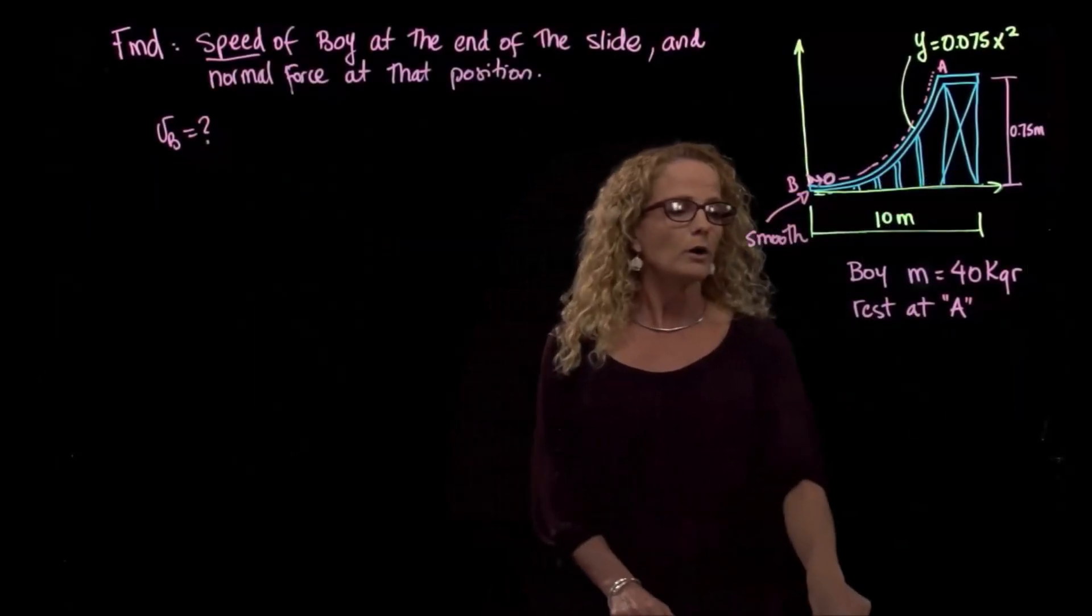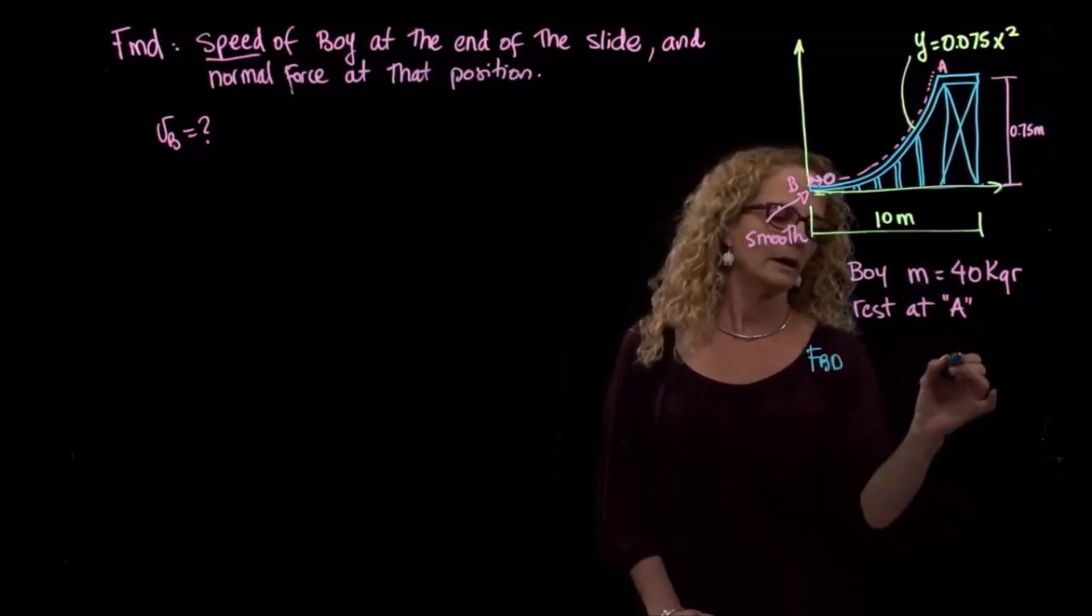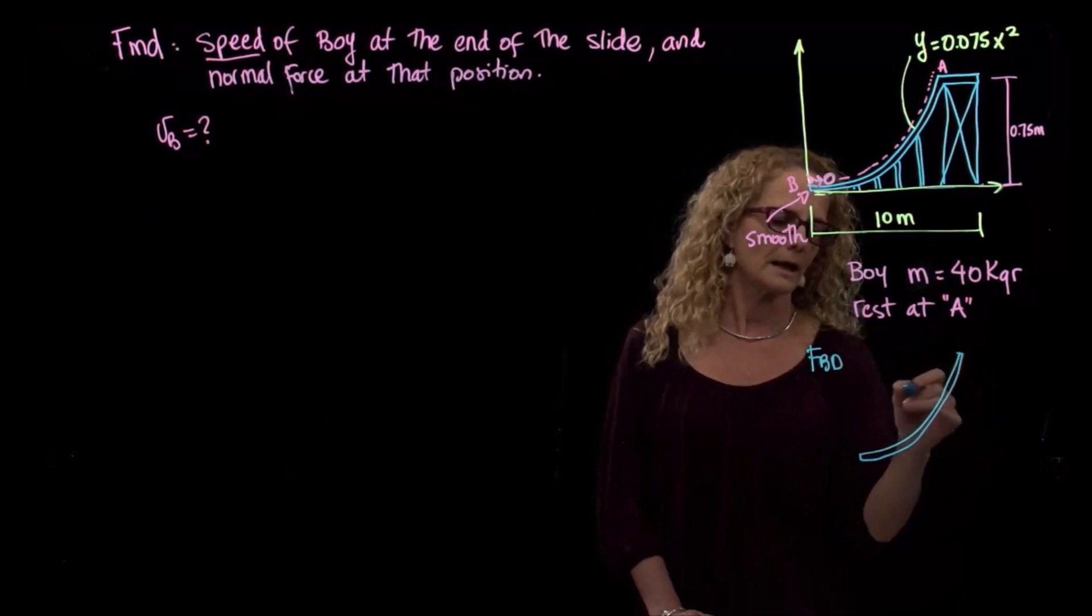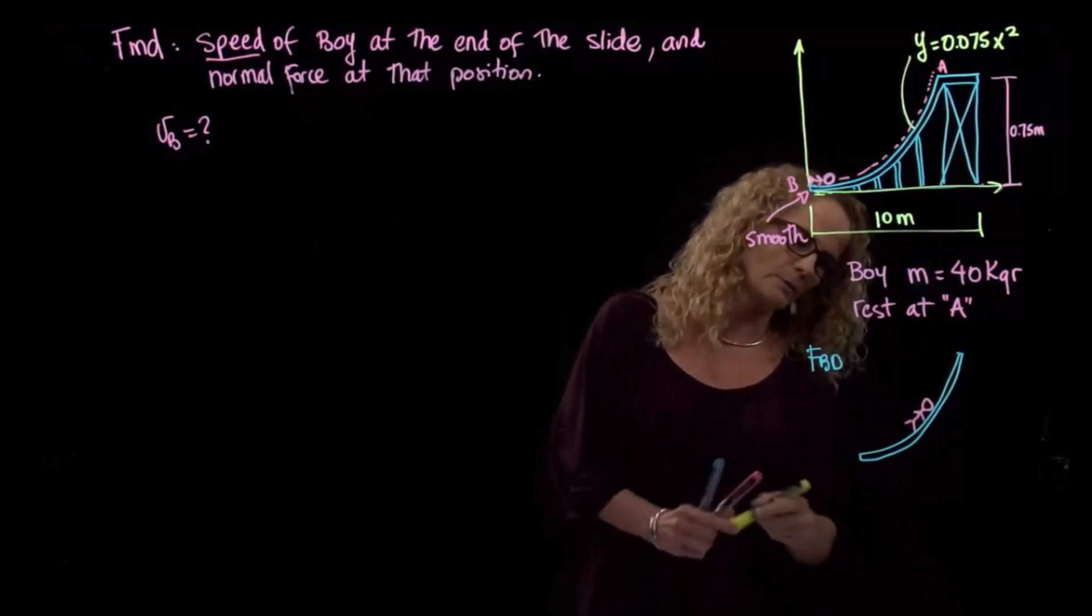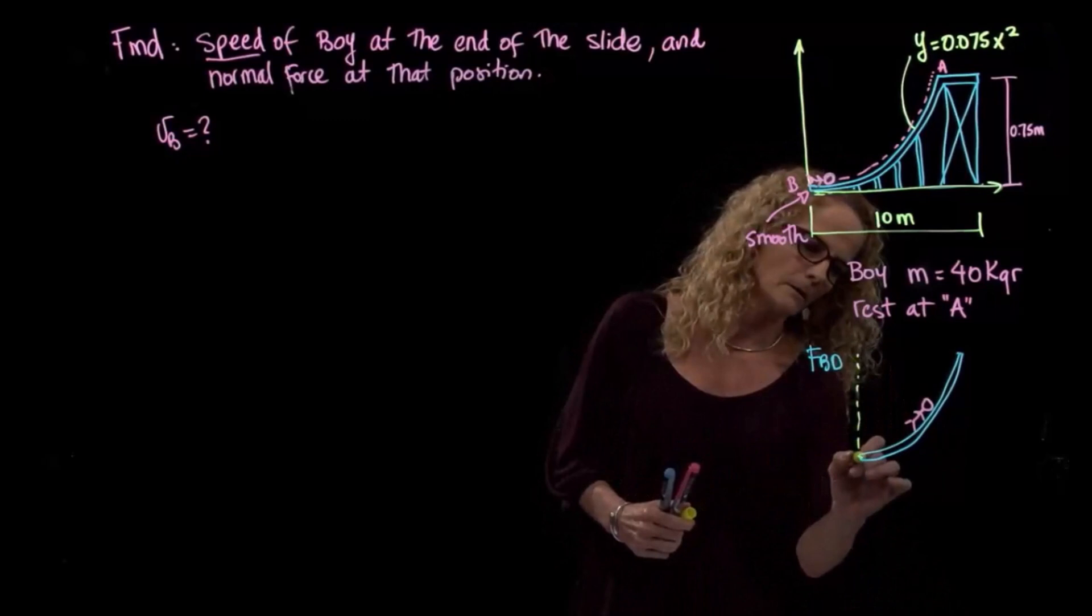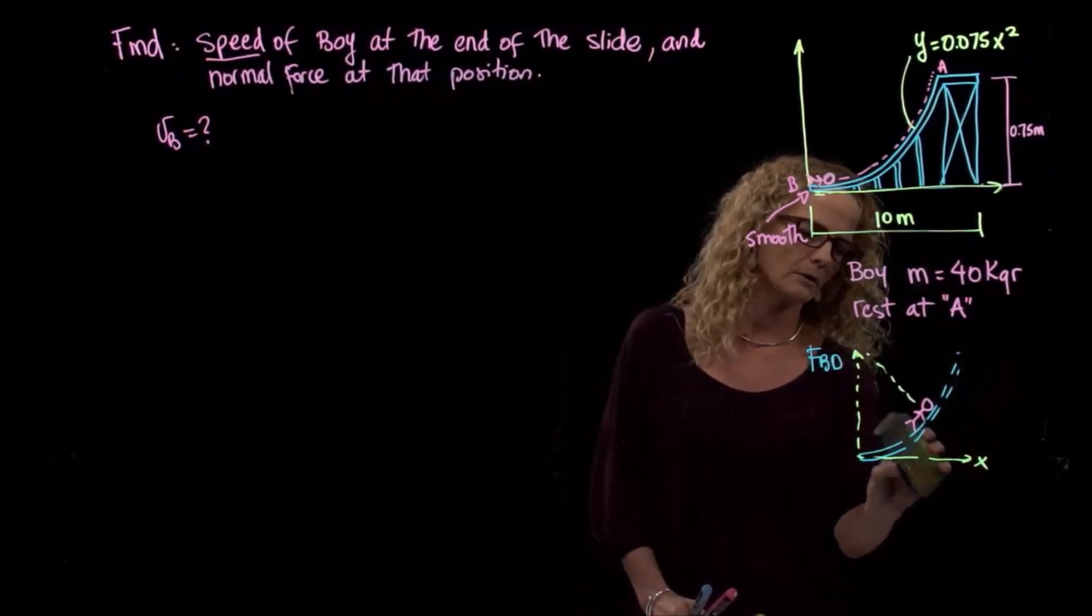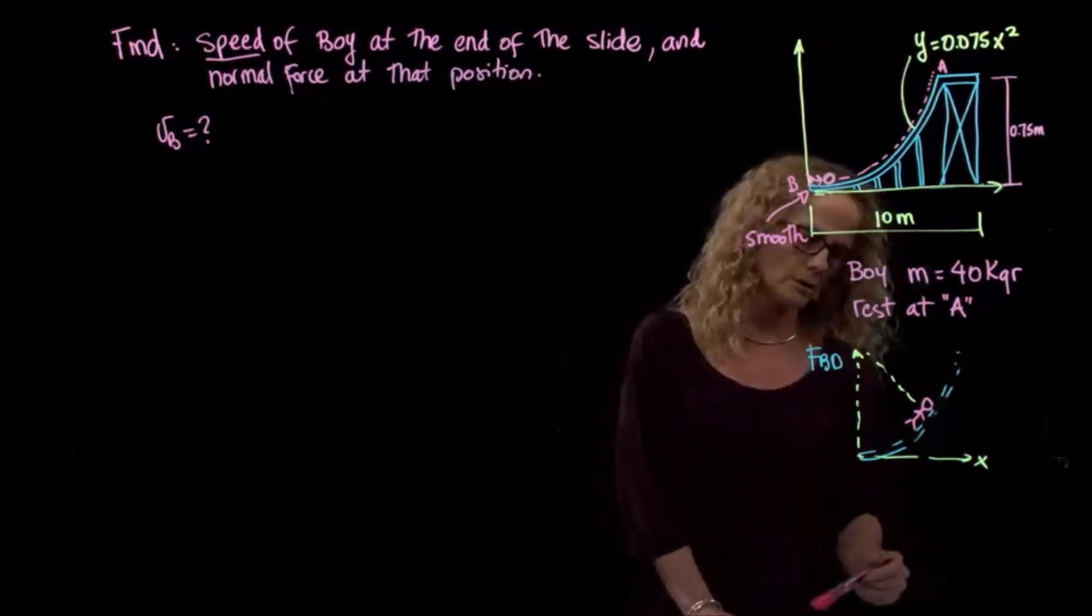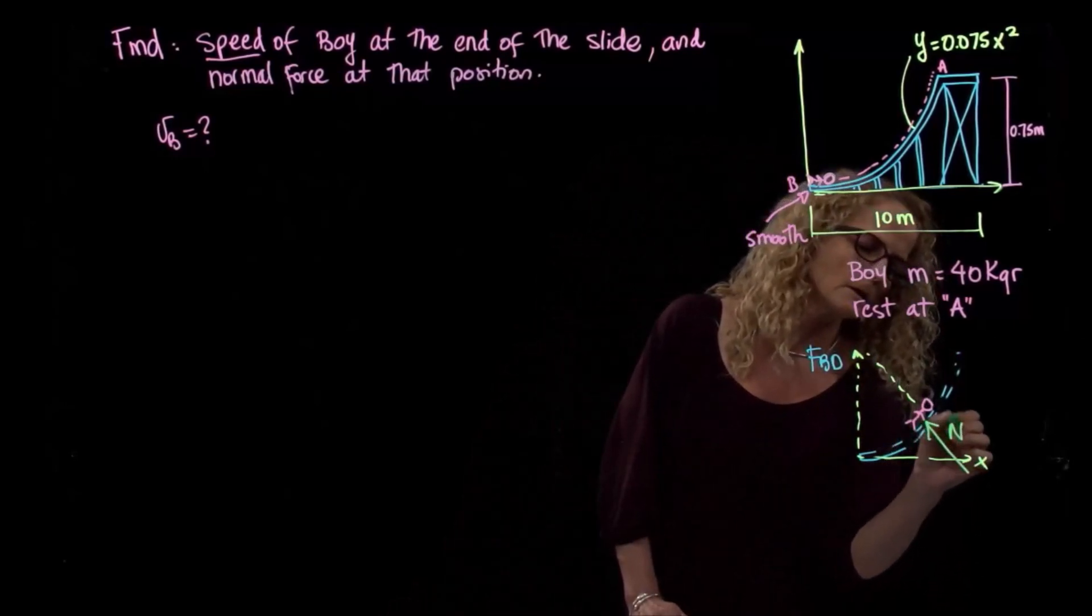Okay, so if we do a free body diagram of the boy in any position of the slide, let's do it like that. So if we do it in a generic position, let me do it in a generic position, and this will be my X and Y, right? And I take my slide out. So to do just the free body diagram of the boy, what forces do I have? I will have a normal force and the weight.